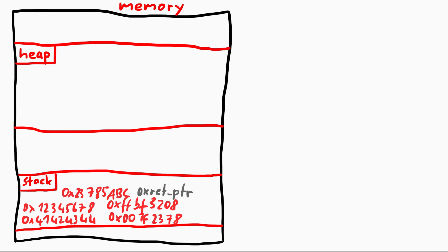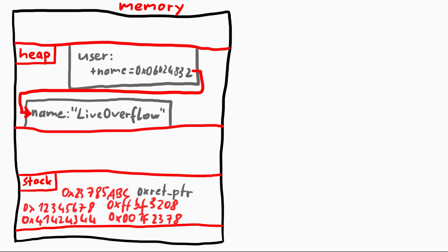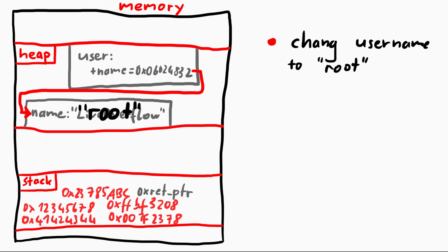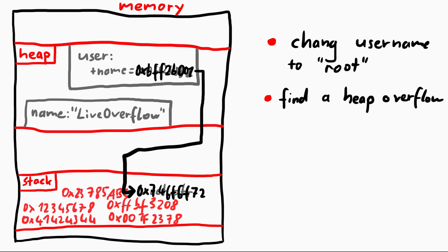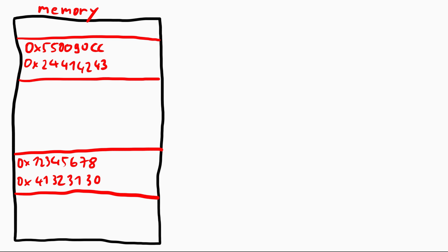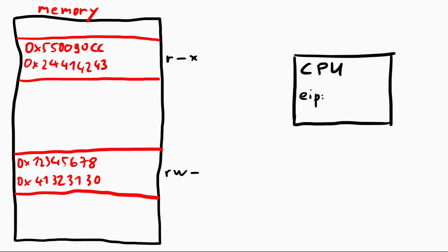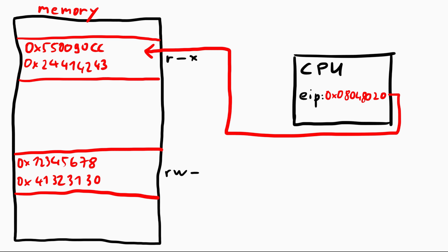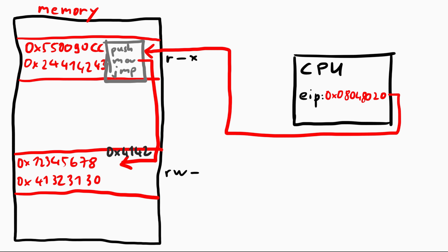For example, think of two objects on the heap: a user object and a name object. The user object has a pointer to the name object, and when you want to change the name of this user, the code follows this pointer and writes the name to that location. If you can somehow overwrite that pointer, you can control where it would write the name to. So you could overwrite the name pointer with an address on the stack, and when you write the new name for the user, you will actually overwrite the stored instruction pointer on the stack. There is memory that contains data — some restrictions apply, like certain areas are not writable and others are not executable — and there is a CPU that is very dumb and just executes whatever EIP points to.